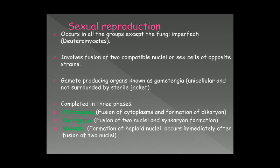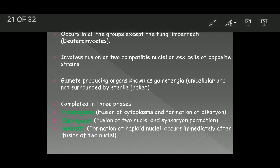Assalamu alaikum, my dear students. Today we are going to talk about sexual reproduction in fungi. Sexual reproduction occurs in all the groups of fungi except Fungi Imperfecti or Deuteromycetes. All other groups of fungi show sexual reproduction, and the process involves fusion of two compatible nuclei or sex cells belonging to opposite strains.